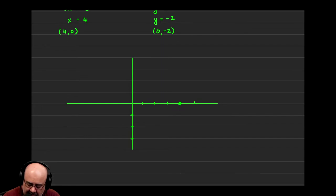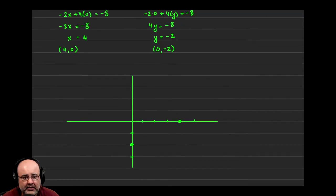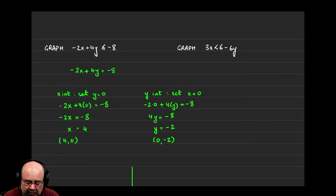...and then (4, 0) would be right there. (0, -2): -1, -2, -3, so (0, -2) would be right there. Now the question becomes: what kind of line should I make? Should I make a dashed line or a dotted line, or should it be a solid line?